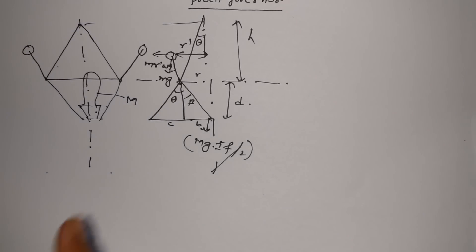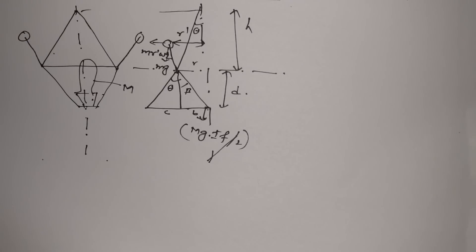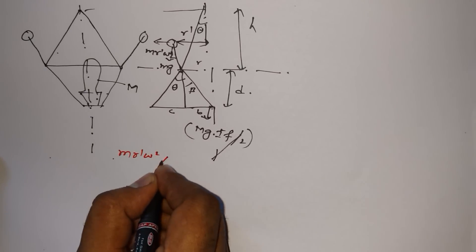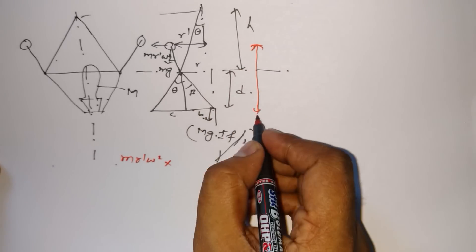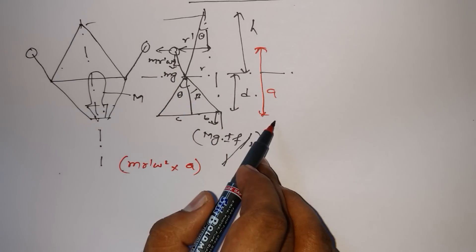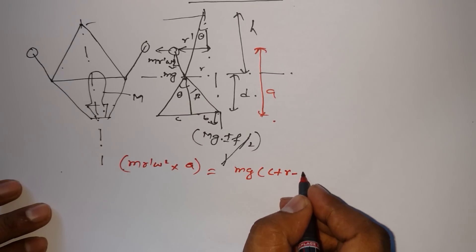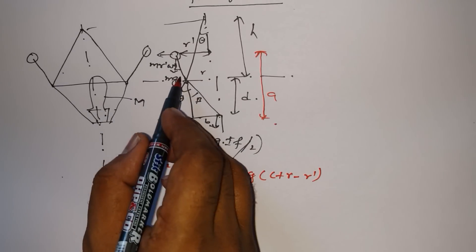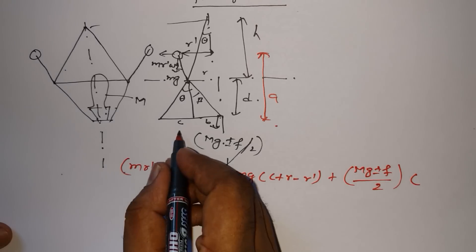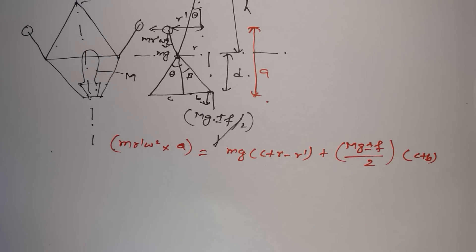Now we have to write the equation. We have to write the balance equation. That equation is: mr-dash times omega-squared into A is the moment, and that is equal to mg times (c plus r minus r-dash), plus mg plus or minus f divided by 2, times (c plus b). That whole distance gives us the moment, and this is the equation for balancing.